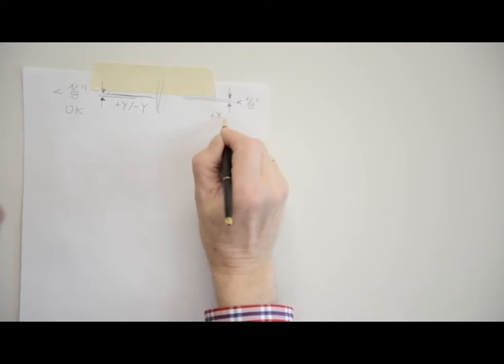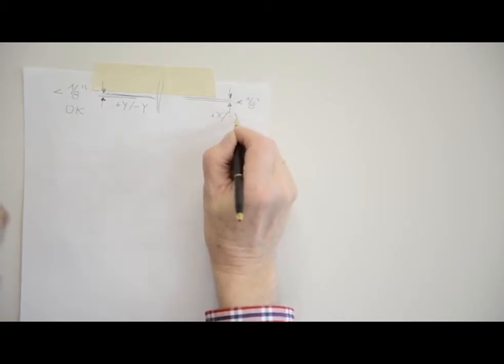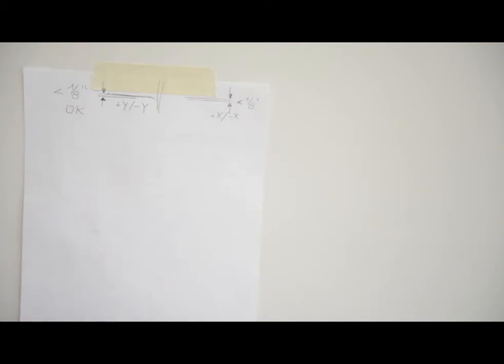Check the difference between the two X axis marks. If they differ more than the published accuracy for this laser, 1/8th of an inch or 3 millimeters for the LL300S, the laser needs calibrating on the X axis.